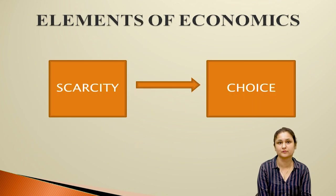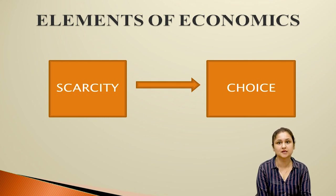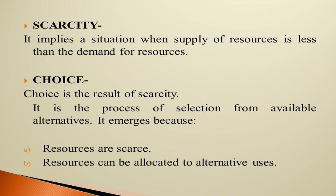Now let's move on to the elements of economics. There are two basic elements: scarcity and choice. Scarcity implies a situation when the supply of resources is less than the demand for resources — when our demand exceeds the supply, it becomes scarcity. When there is scarcity, the choice arises. Choice is the result of scarcity — it is the process of selection from available alternatives.